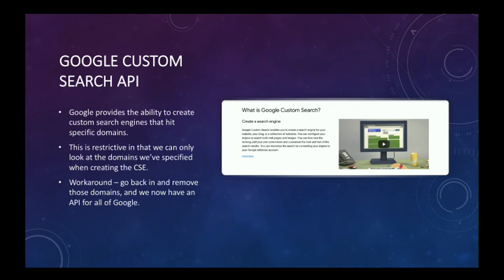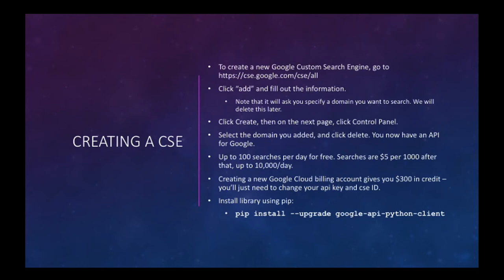The first thing we're going to talk about is the Google Custom Search API. Google provides the ability to create a custom search engine. Usually their thinking is that you're going to take that custom search engine and stick it on your website to search your website or one or two associated websites. It's restrictive because we can only look at the domains we've specified when creating the CSE. However, there's a workaround: you can go back and delete the domains you've added, and at that point you're basically just searching all of Google with this API.